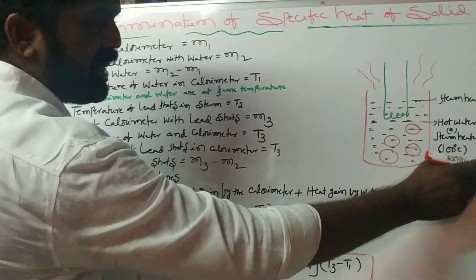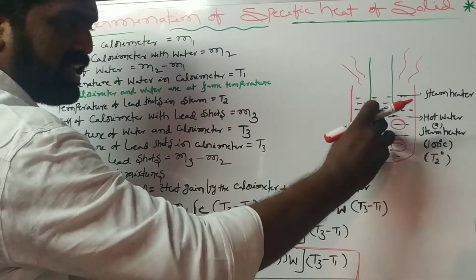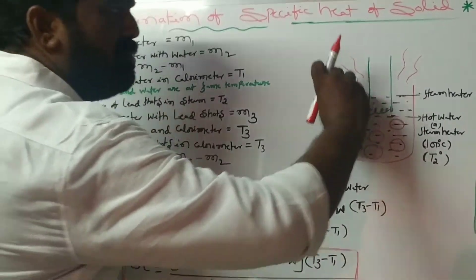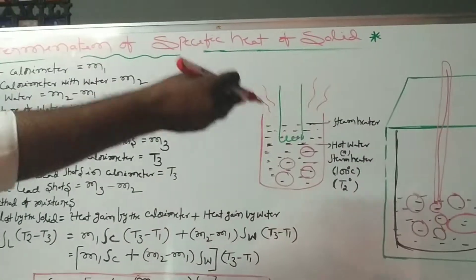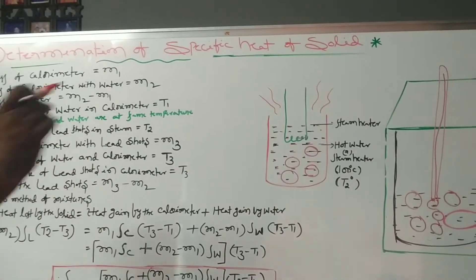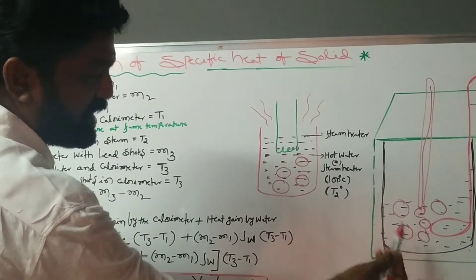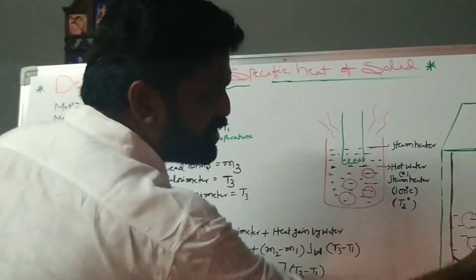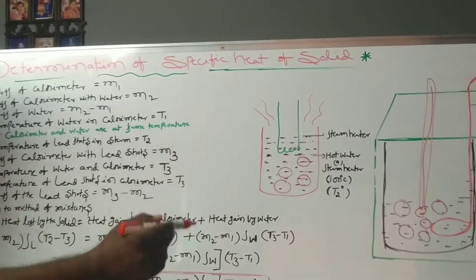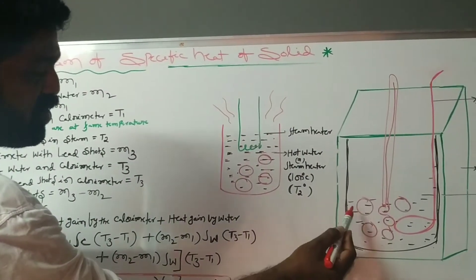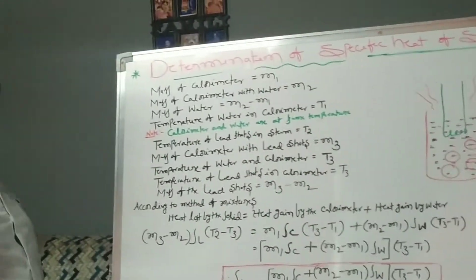These lead shots are taken out from the steam and immediately transferred into the calorimeter. When they are dropped into the calorimeter, heat is transferred from the lead shots to the water and the copper calorimeter.